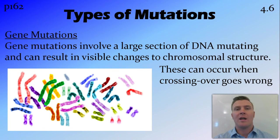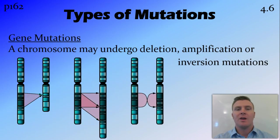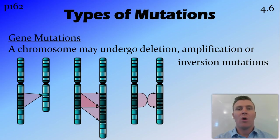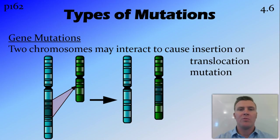Gene mutations can occur when crossing over goes wrong. On an individual chromosome level, a chromosome may undergo a deletion where a section of DNA is removed, an amplification where a section of DNA gets doubled or tripled, or an inversion where a section of DNA is swapped and turned back to front.